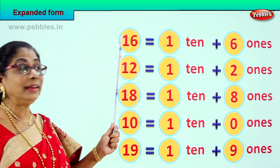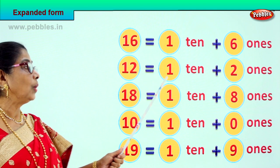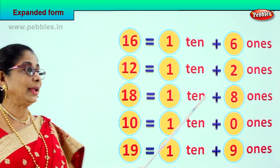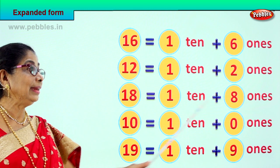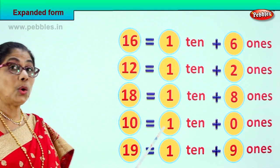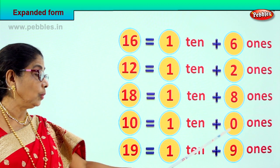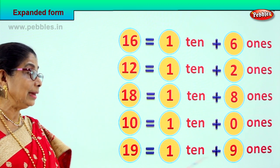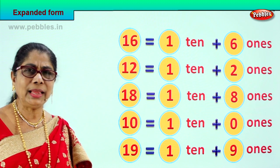19 has 1 ten and 9 ones. Now let's look at all of them: 16 is 1 ten, 6 ones. 12 is 1 ten, 2 ones. 18 is 1 ten, 8 ones. 10 is 1 ten, 0 ones. 19 is 1 ten, 9 ones. Did you enjoy?